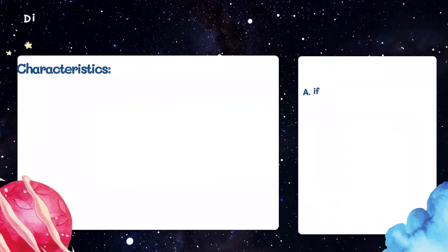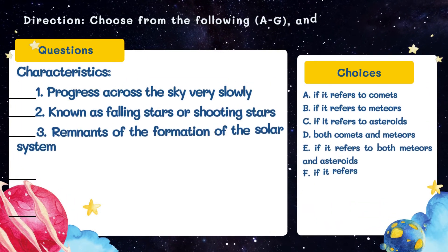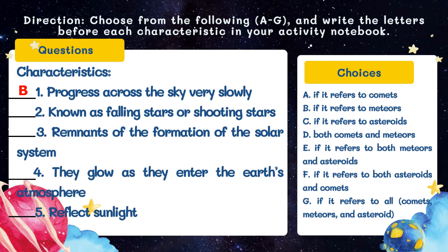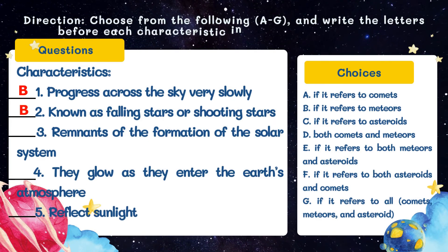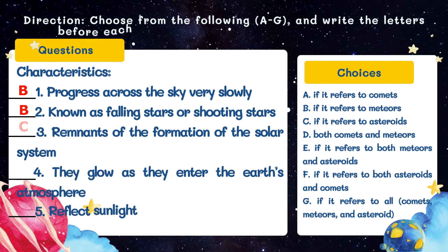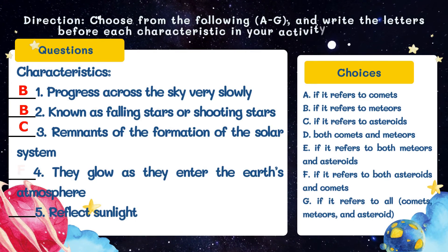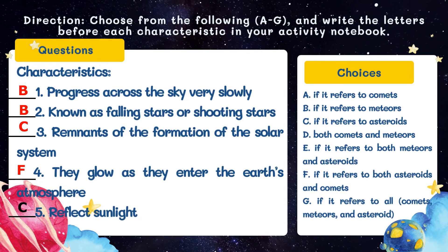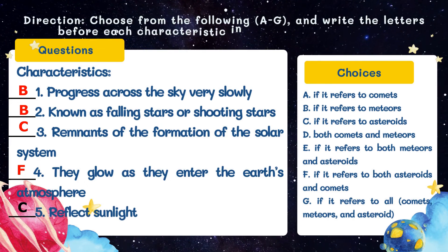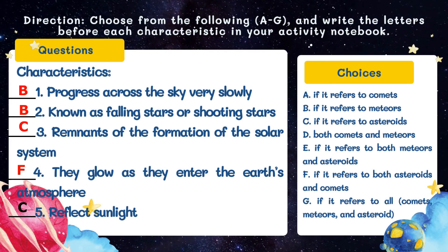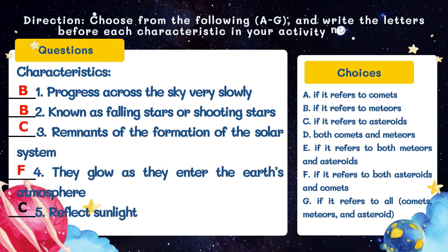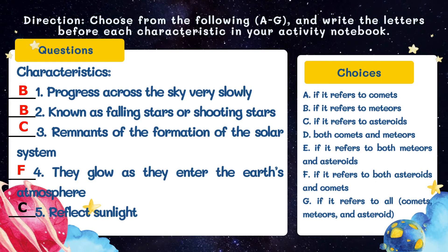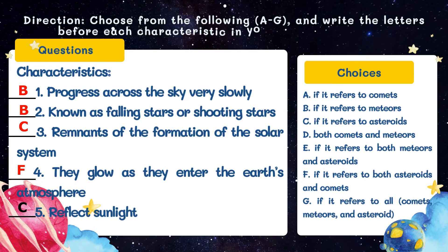Let us now check your answers. Number one: progresses across the sky very slowly — the answer is letter B, it refers to comets. Number two: known as falling stars or shooting stars — the answer is letter B, it refers to meteors. Number three: remnants of the formation of the solar system — the answer is letter C, it refers to asteroids. Number four: they glow as they enter the Earth's atmosphere — the answer is letter F, it refers to both asteroids and comets. Number five: reflect sunlight — the answer is letter C, it refers to asteroids.